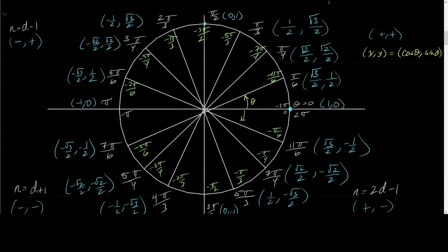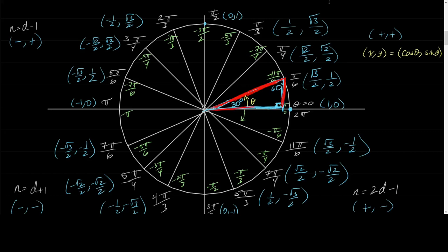How does this relate to the unit circle? In the unit circle, if we look at the triangle at pi over 6, this angle is 30 degrees and this angle is 60 degrees, with a 90-degree angle. Let's draw that triangle in a different color so we can see it better.